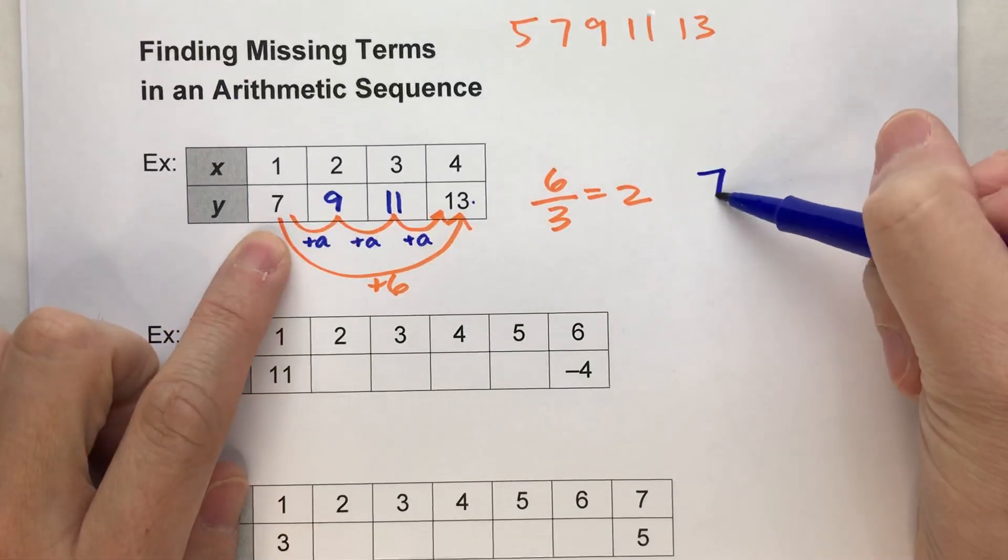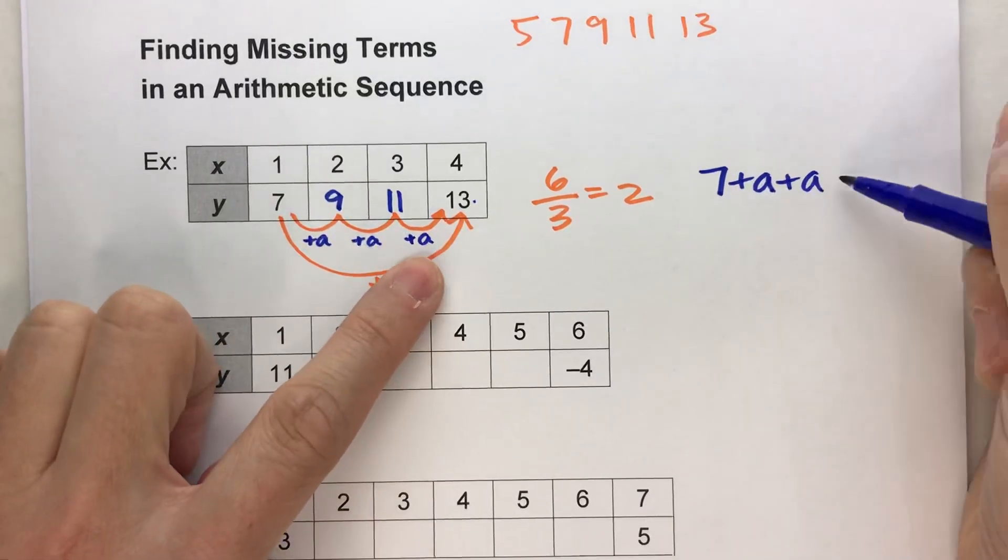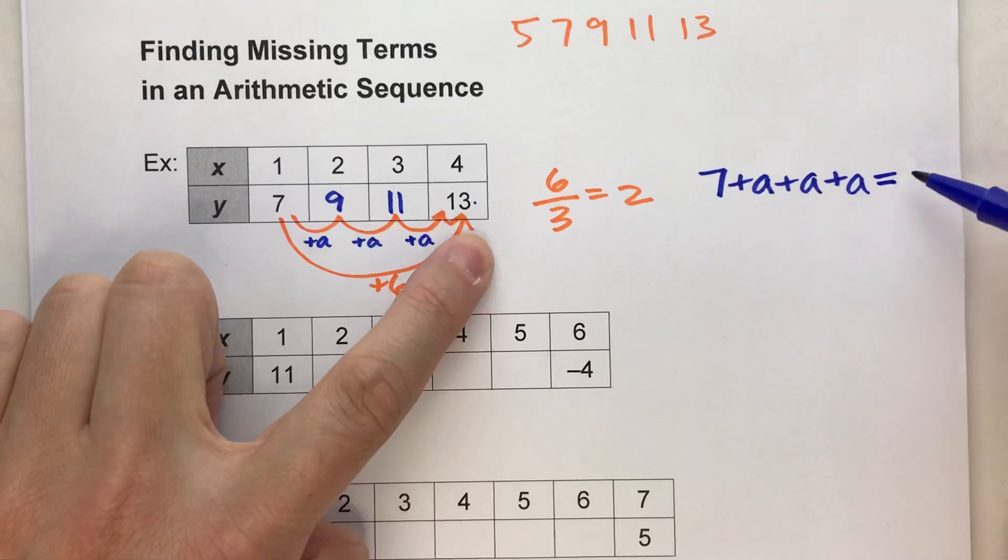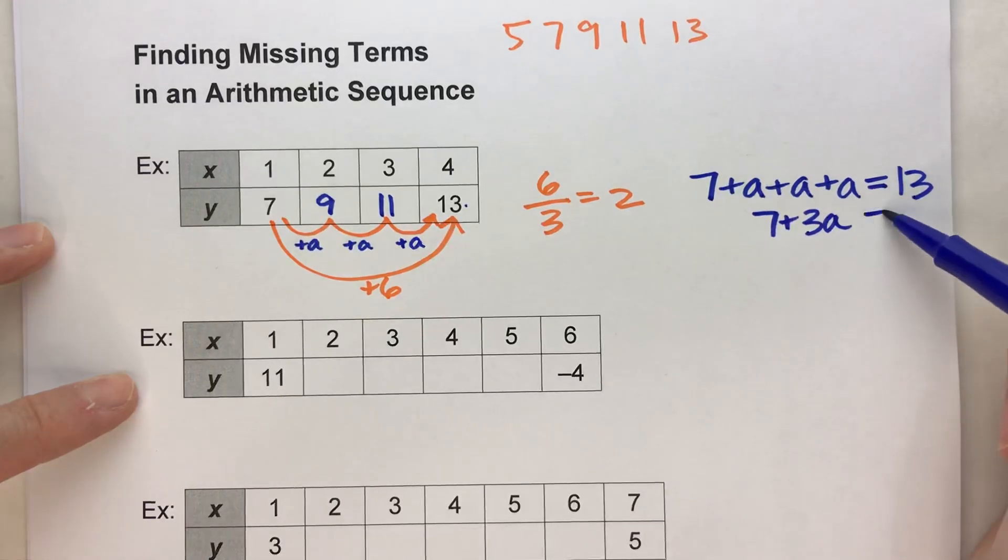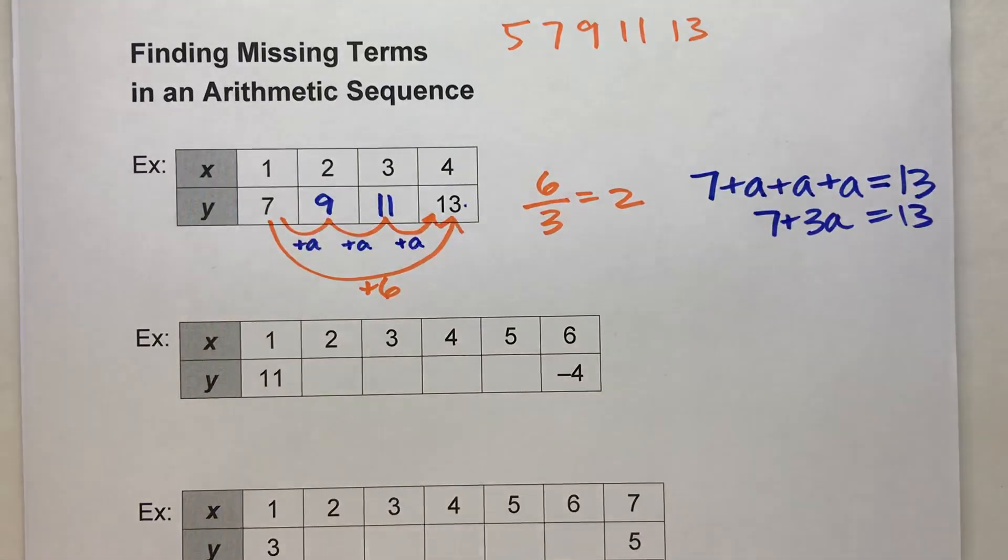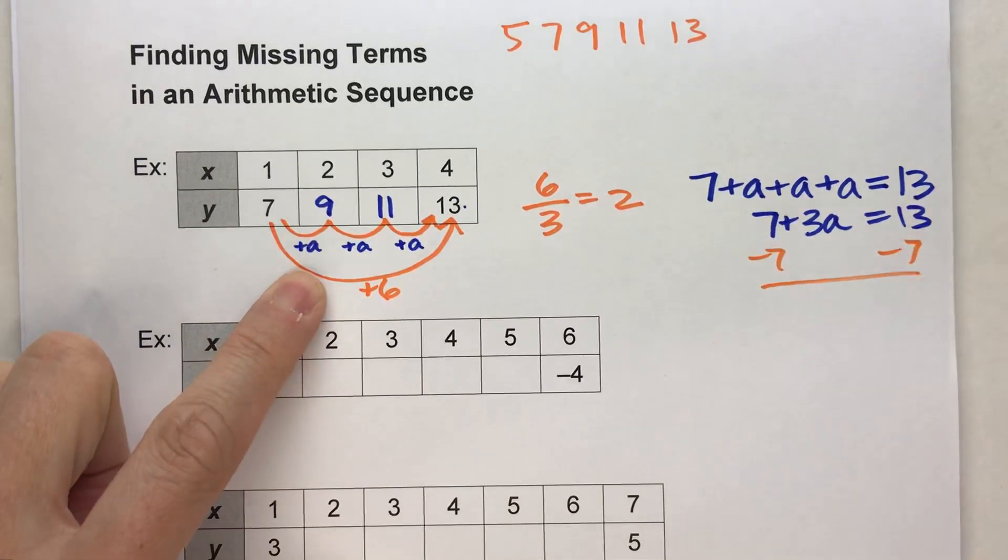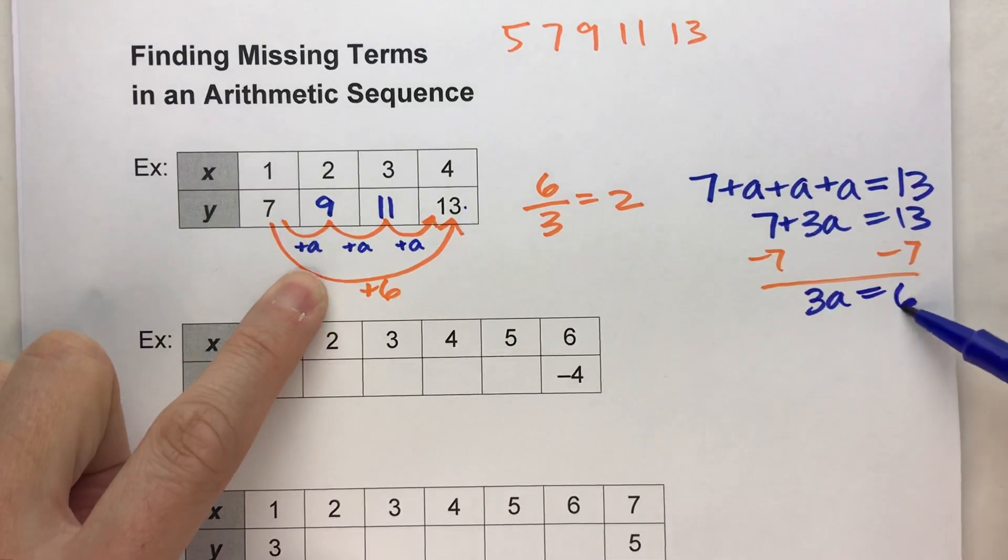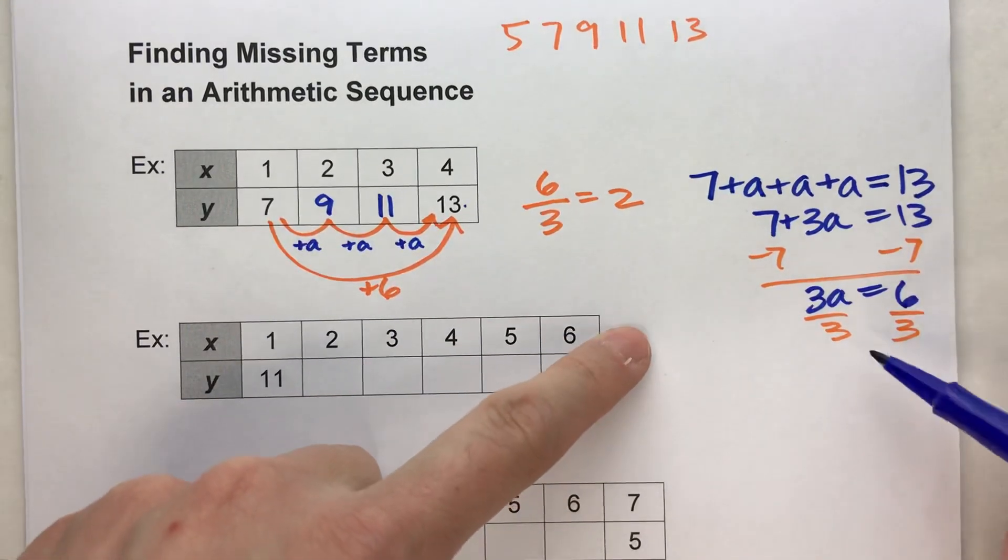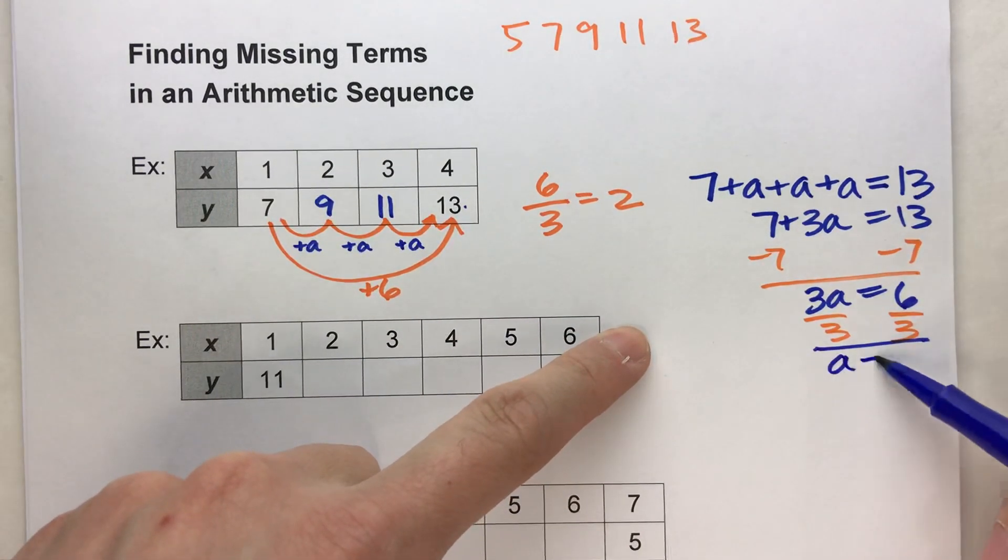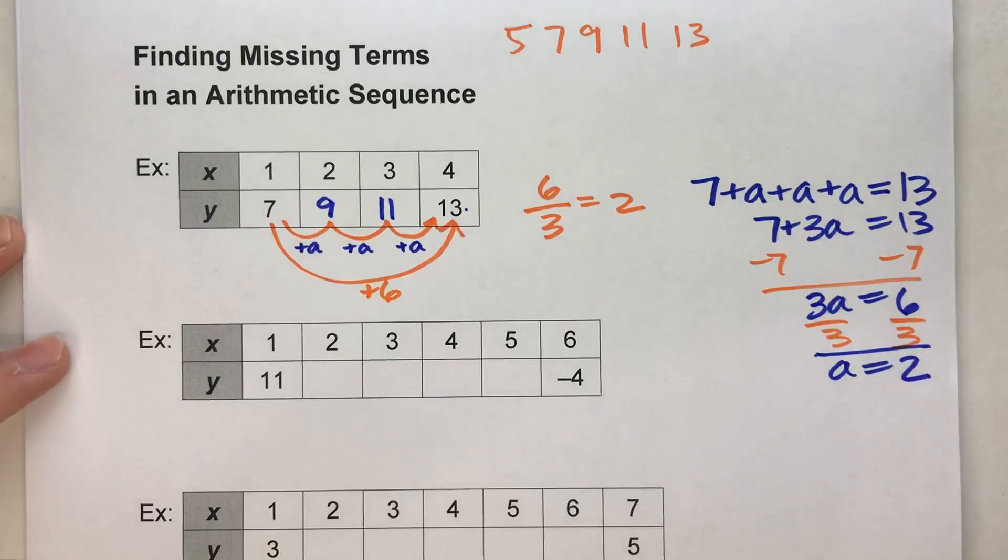So we could set up an equation for this. We could say we start at 7. We added A, we added another A, we added another A, and we ended up at 13. So we've got 7 plus 3A is equal to 13. So we can solve this algebraic equation and figure out how much it's going up by. So if I subtract 7 on both sides, I get 3A equals 6. That looks familiar because I'm going to divide both sides by 3.